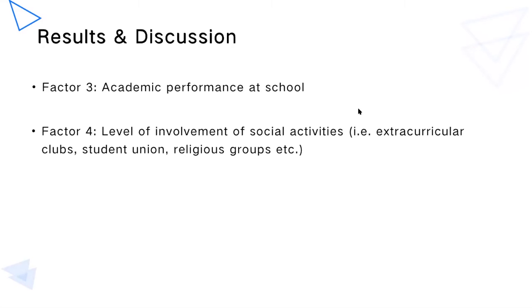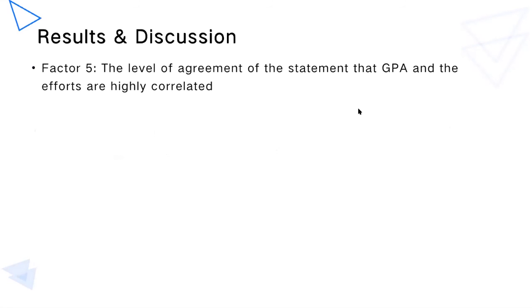The fourth factor is the level of involvement in social activities, such as extracurricular clubs, student unions, and religious groups. According to the result, the level of involvement in social activities is not positively related with career maturity. A possible explanation is that social activities are not necessarily helpful for gaining career maturity — although they help build leadership and group cooperation skills, these may not be significantly related to career maturity.